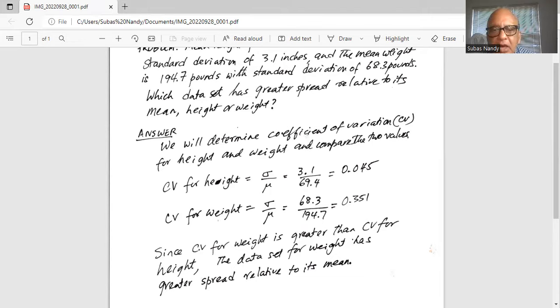And the variability in height is 4.5% relative to its mean. So therefore the data set for weight has greater spread relative to its mean, since its CV is higher.